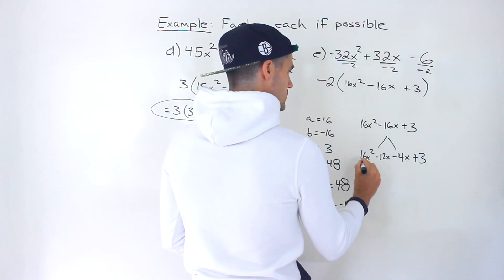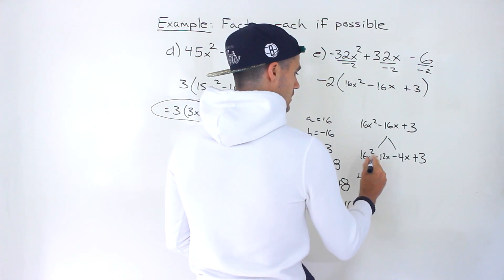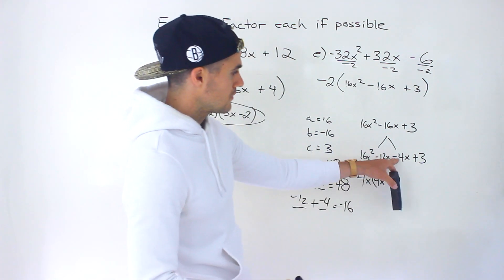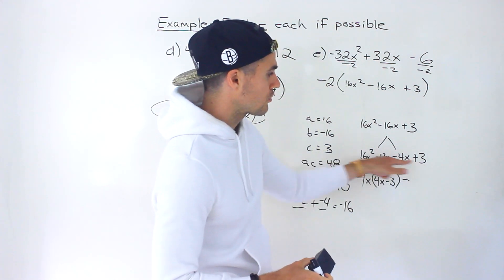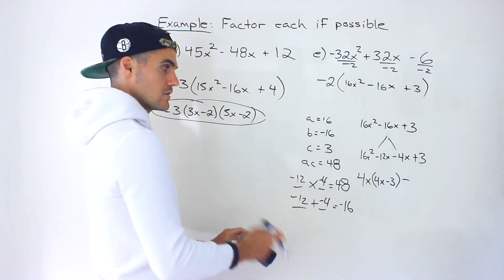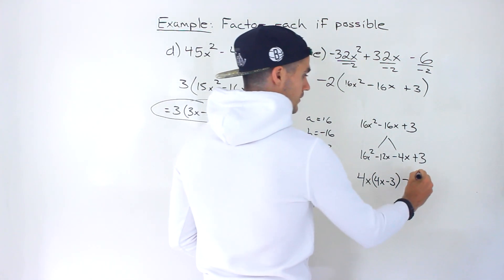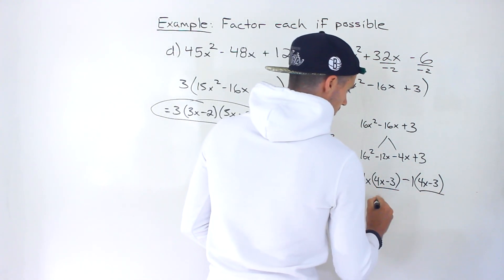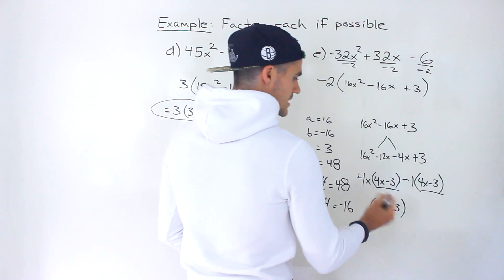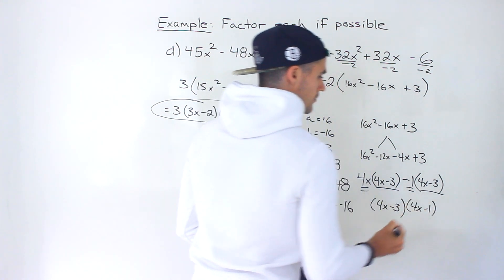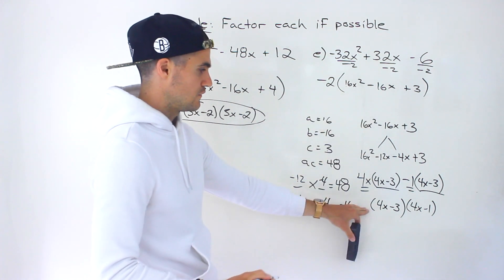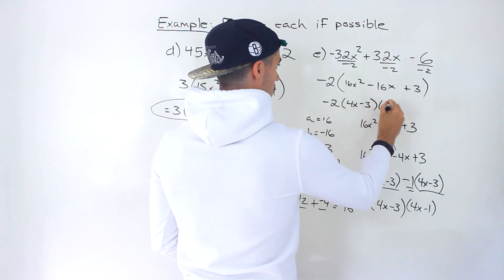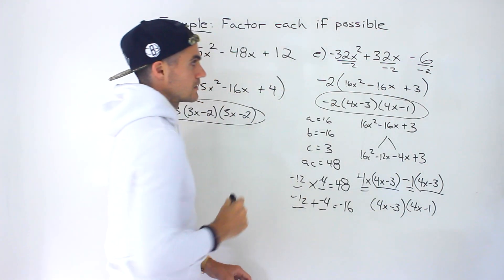From the first pair take out 4x — between 16 and 12 we take out 4 and x — leaving 4x minus 3. From the second pair there's a negative, and 4 and 3 have no common factor, so take out negative 1, also leaving 4x minus 3. Take out the common factor 4x minus 3, leaving 4x minus 1. So the final answer is negative 2(4x minus 3)(4x minus 1).